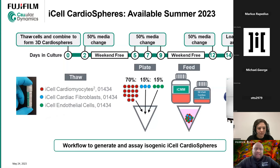We combined three cell types into an isogenic culture: iCell Cardiomyocytes Squared, iCell cardiac fibroblasts, and iCell endothelial cells — all from the same background. When combined right out of thaw in these ratios, they form really nice spheres. We'll be providing the media for this. The workflow is weekend-free: 50% media change Monday, Wednesday, Friday, and in two weeks they are ready for assay.